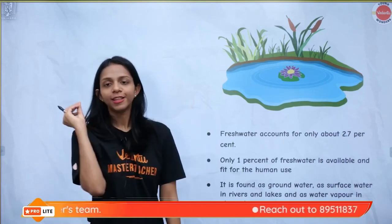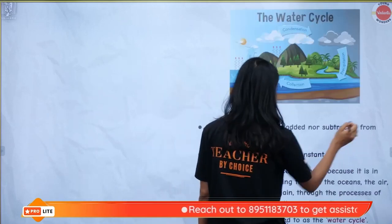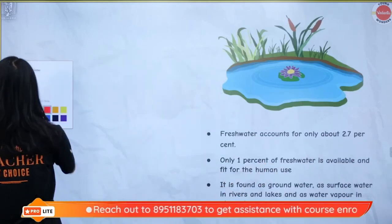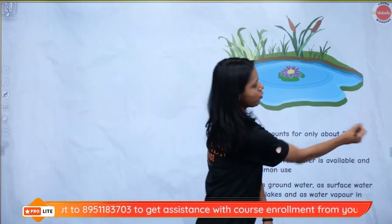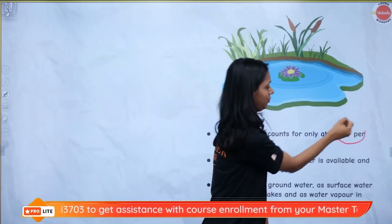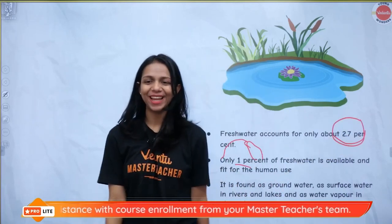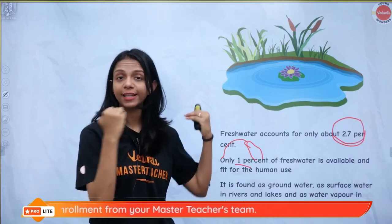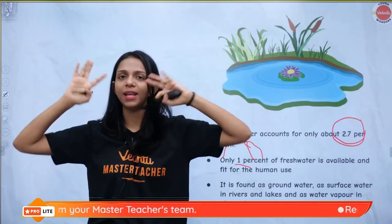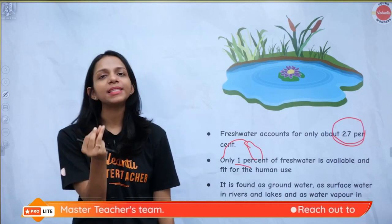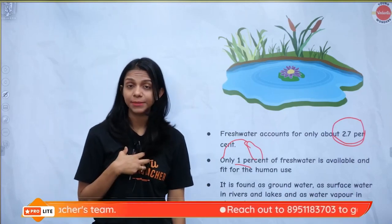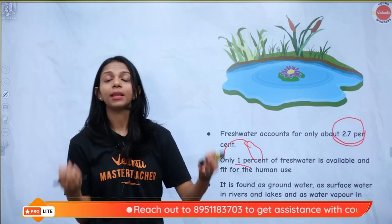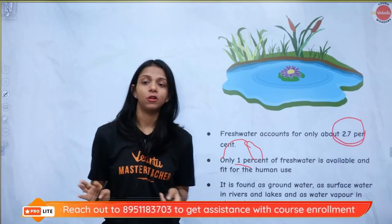Fresh water, which is fit for human consumption, is only about two point seven percent. And out of that two point seven percent, most of it is stuck in glaciers in Antarctica, Greenland, etc. Only one percent is available for human consumption, and this one percent includes tap water, river water, water vapor, and underground water. So fresh water is one of the most important and valuable commodities for all of us.